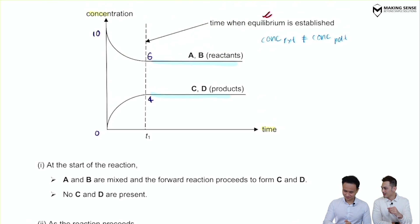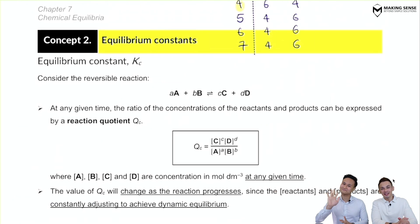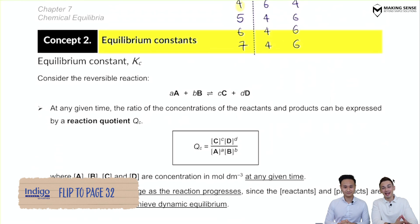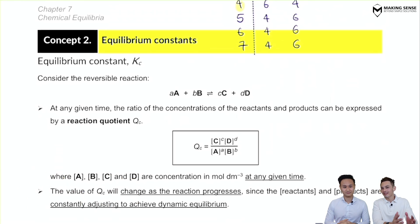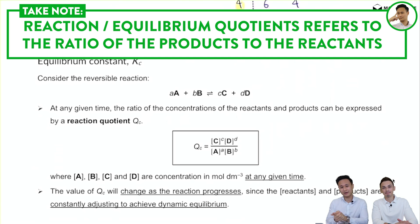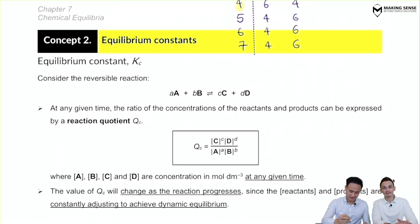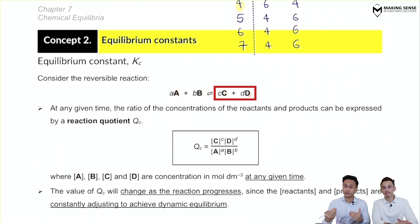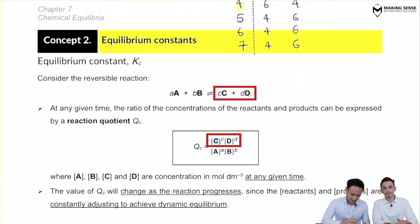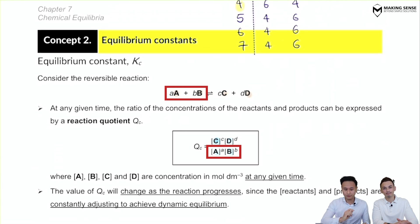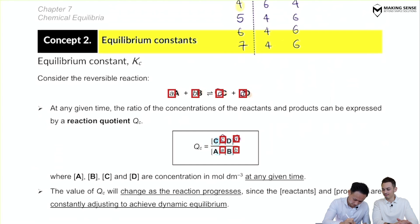Shall we bring in concept two? Let's go — the concept of Kc. In the second concept, we're going to revisit Kc, Kp, and Qc. These are just reaction quotients — simply the ratio of the products to the reactants. For a reversible reaction A plus B becomes C plus D, Qc is the concentration of products over the concentration of reactants, raised to the power of the stoichiometric ratio.